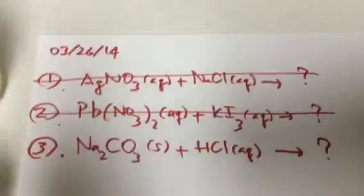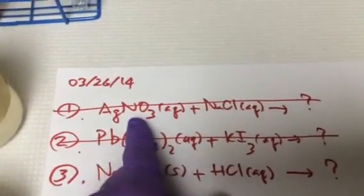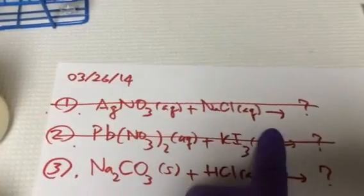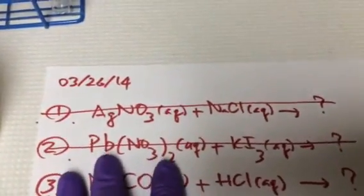So far we have done number one: silver nitrate plus sodium chloride. We know the result on that one — it creates a white precipitate. And the second equation, the nitrate plus KI3, it creates yellow precipitations.